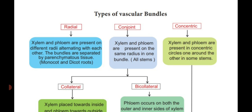The vascular bundles are divided into three types: radial, conjoined, and concentric. These three types with their diagrams and their classifications you already studied in 10th standard. Once again, we are going to study them in 11th standard.